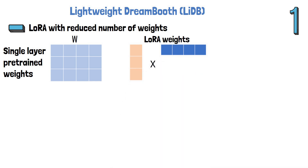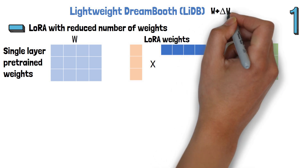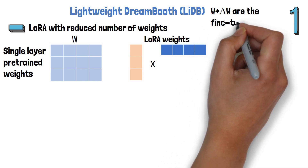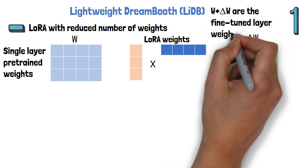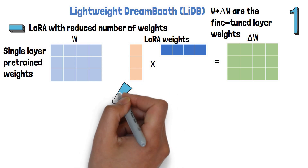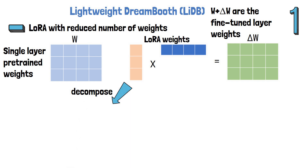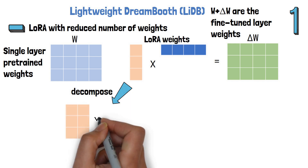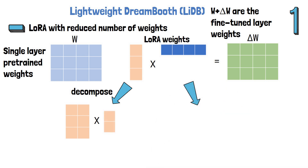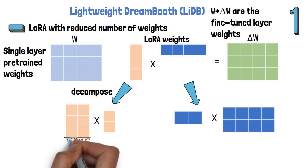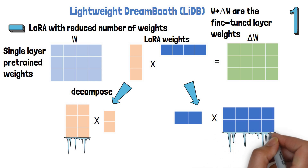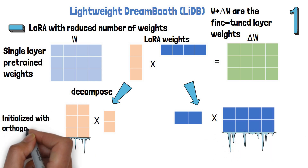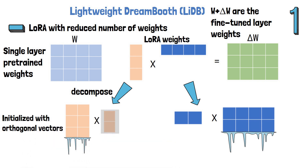This is usually noted as delta W, which represents the residuals added to the pre-trained W matrix, and the sum of W and delta W are the fine-tuned layer weights. To further reduce the added weights, they do a similar trick to LoRA and decompose the LoRA weights further. For example, the column is decomposed to a 3x2 matrix multiplied by a 2x1 column, and the row is decomposed to a 2x1 row multiplied by a 2x4 matrix. The left and right matrices are kept frozen — initialized with random orthogonal vectors and stay constant — so only the middle vectors are the added weights we train, giving us a smaller number of weights than standard LoRA.